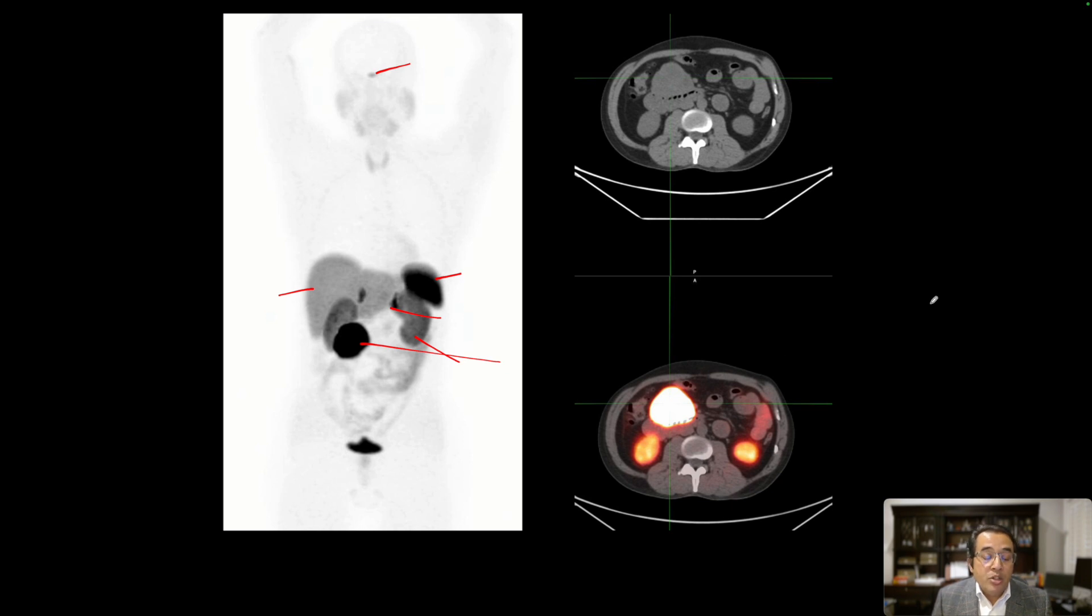And so based on this, patient underwent a Whipple procedure and the neuroendocrine tumor was completely resected. It was found that it was arising from the head of the pancreas and was exophytic in nature.